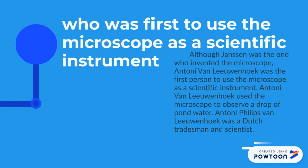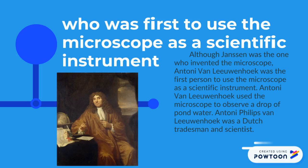Who was the first to use the microscope as a scientific instrument? Although Janssen was the one who invented the microscope, Antonie van Leeuwenhoek was the first person to use the microscope as a scientific instrument. He used the microscope to observe a drop of pond water.